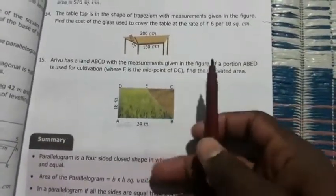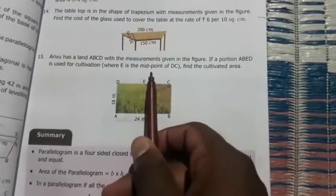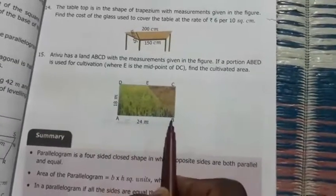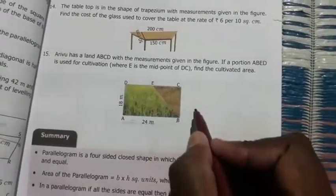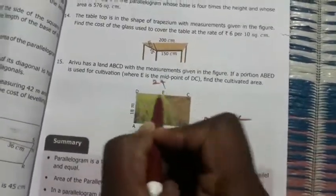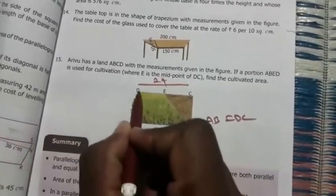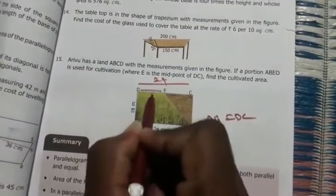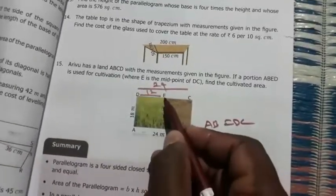See that we are given one condition in the question, where E is the midpoint of DC. So here AB is the measurement, that is DC. AB is the same. AB is 24, DC is 24. Then total distance is 24. So DE is 12.